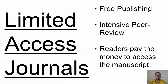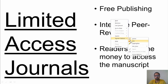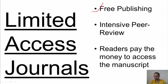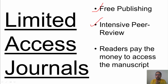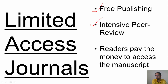Limited access journals are those where authors do not have to pay to publish a research article. They have intensive peer review. Every journal has its scope, and according to that scope they have a group of experts. Those experts check that whichever article comes in matches the journal's quality. Your article is sent to that expert group, and they give you comments — this whole process is called peer review.